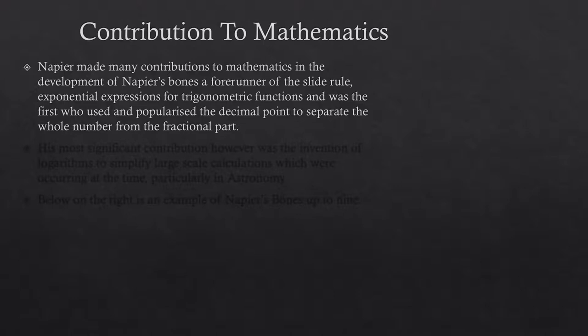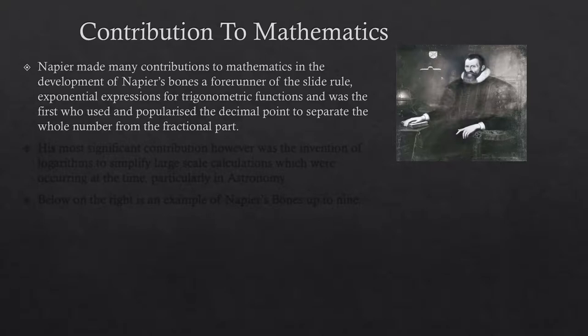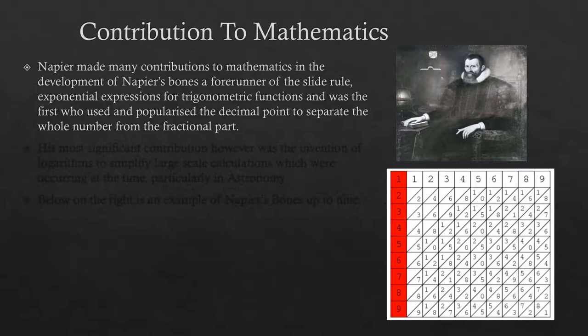Napier made many contributions to mathematics in the development of Napier's bones, a forerunner of the slide rule, exponential expressions for trigonometric functions, and was the first who used and popularized the decimal point to separate the whole number from the fractional part.